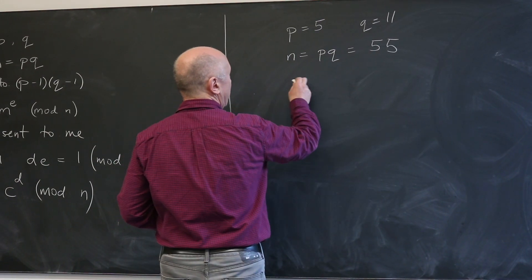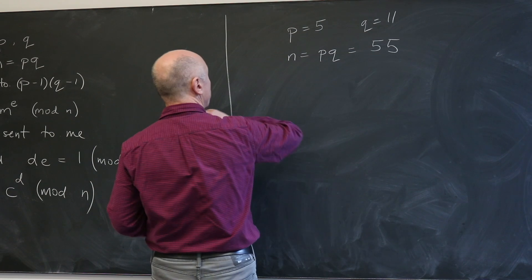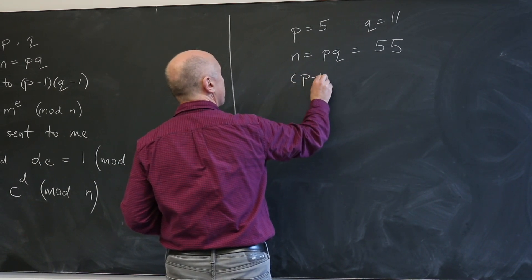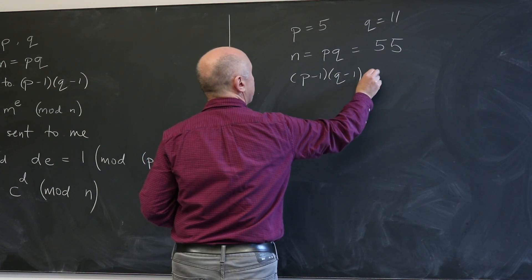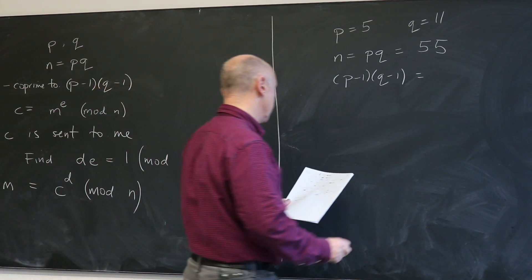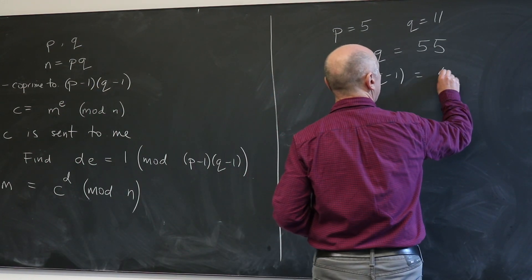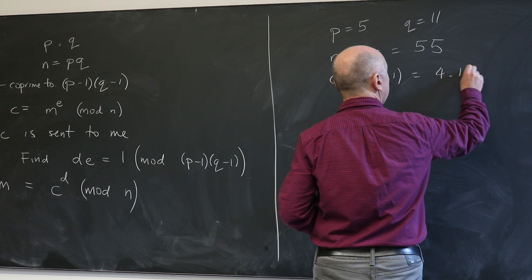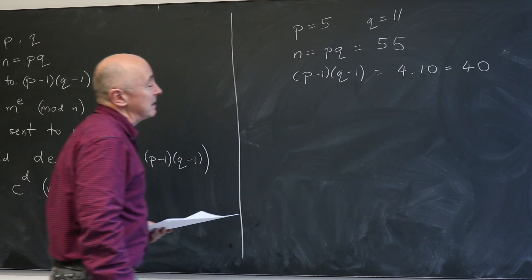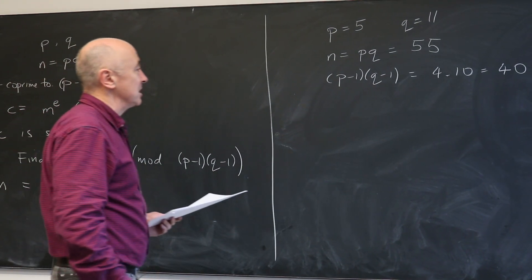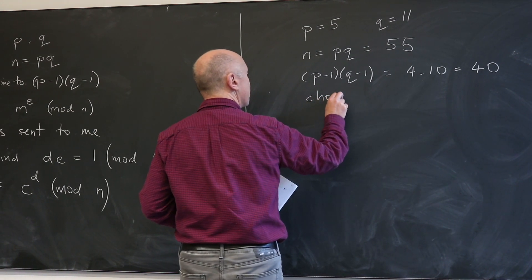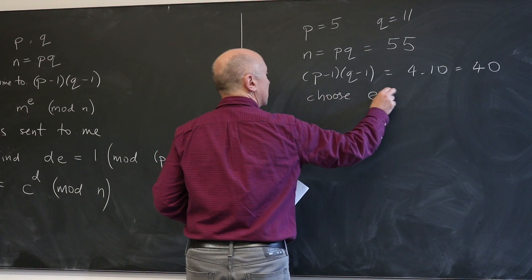I also want to form a number E. For that I need to compute P minus 1 times Q minus 1, and that's obviously 4 times 10 which is 40. So I need to choose a number E which is coprime to 40, which has no prime factors in common with 40. So I'm going to choose E to be 3.